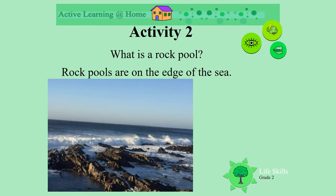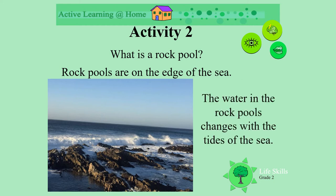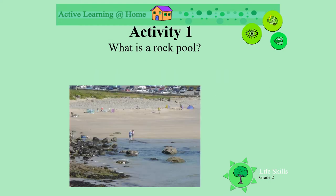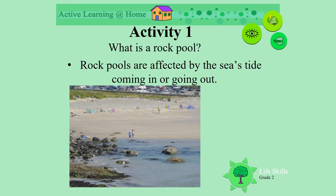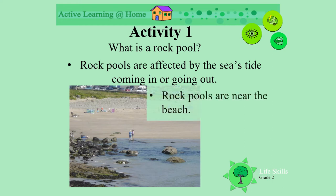What is a rock pool? Rock pools are on the edge of the sea. Look at the waves crashing over the big rocks to create the pools. The water in the rock pools changes with the tides of the sea going in and out. Rock pools are affected by the sea's tide coming and going, and they are near the beach.